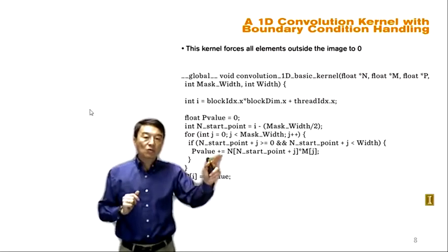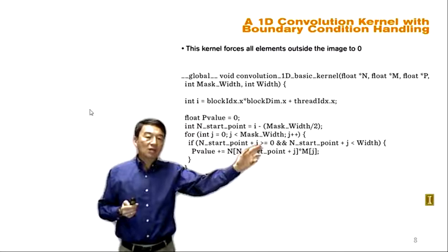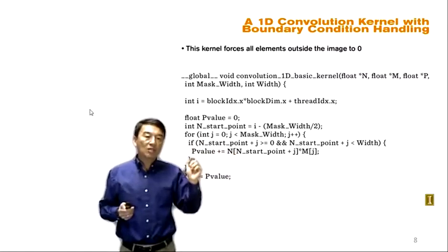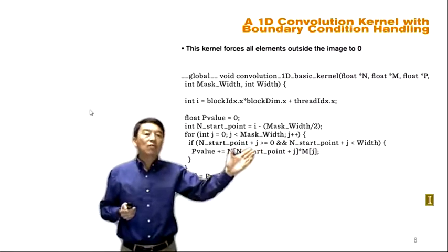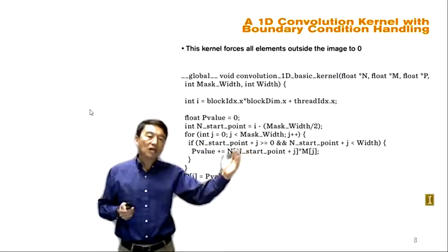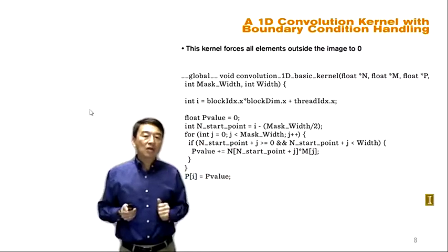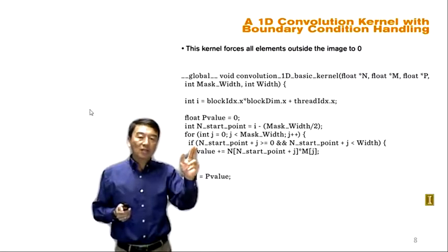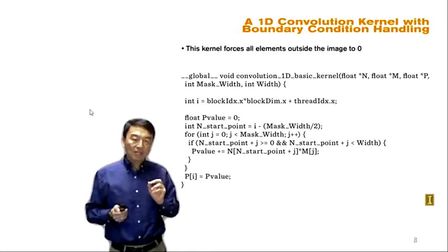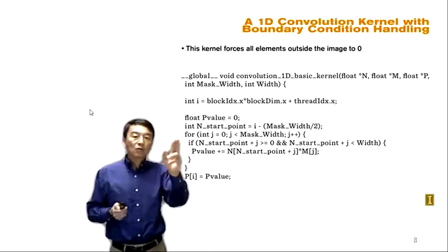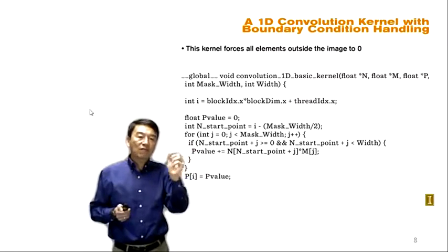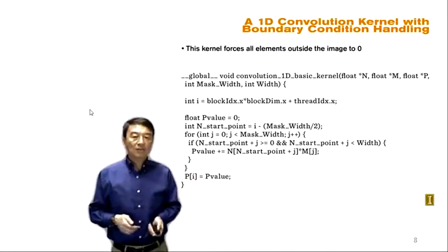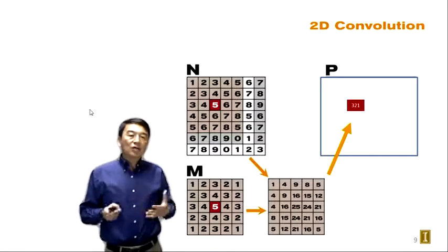The same boundary test is applied on the right-hand side: when the input element index (n_start + j) is greater than or equal to the width, we also assume those ghost elements have value zero and skip the accumulation. This for loop with the conditional if-test implements a policy where all ghost elements outside the valid range are zero. Once we finish the entire weighted sum calculation, we have the answer for the output element in p_value and write it to the corresponding position in the output array P.